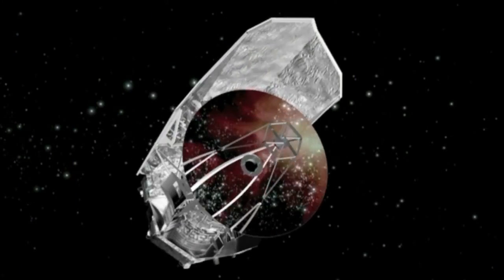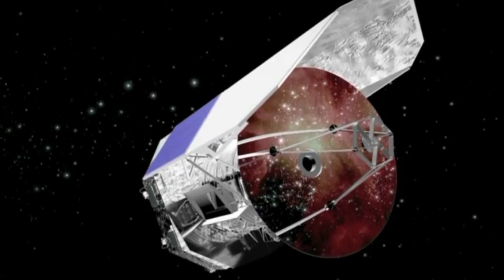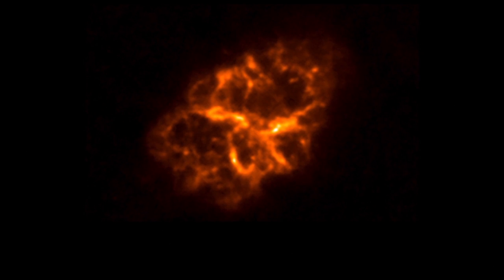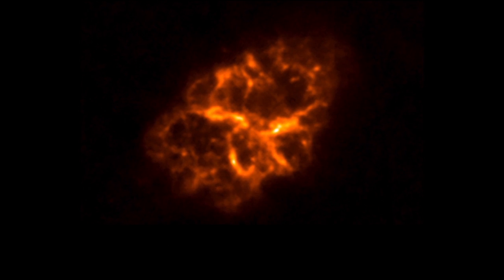Herschel also took spectra of the nebula, separating the light out into different wavelengths. When you do that, you can measure the various properties of the object observed, including its chemical composition.